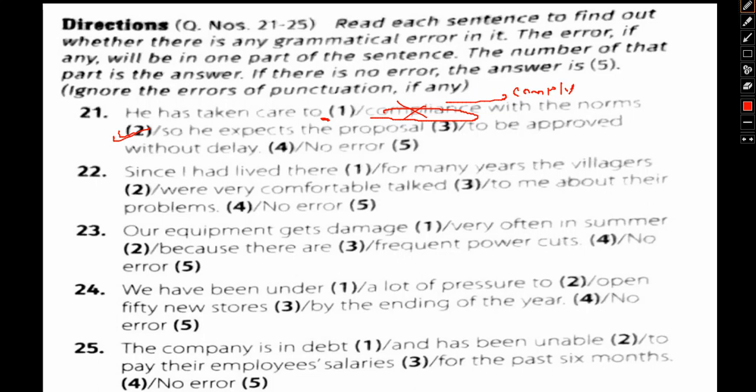Let's take a look. Since I had lived there, this is correct, no issues. For many years, since I lived there for many years, the villagers—part 2 is also okay. Were very comfortable talked—talked is wrong.